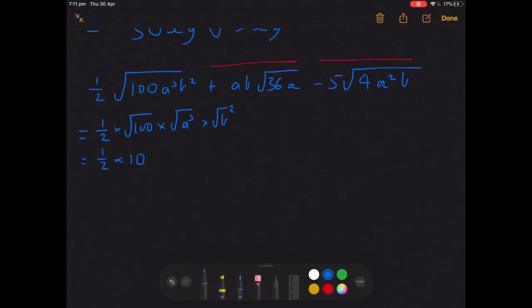So half stays as half. Root 100 is 10. Root a cubed, the way that they liked to do it, is root a squared times a. Root b squared, that's just b. All we've got left is root a squared times a to deal with. Half times 10 is 5. Root a squared just becomes a. Final clean up: 5ab root a.